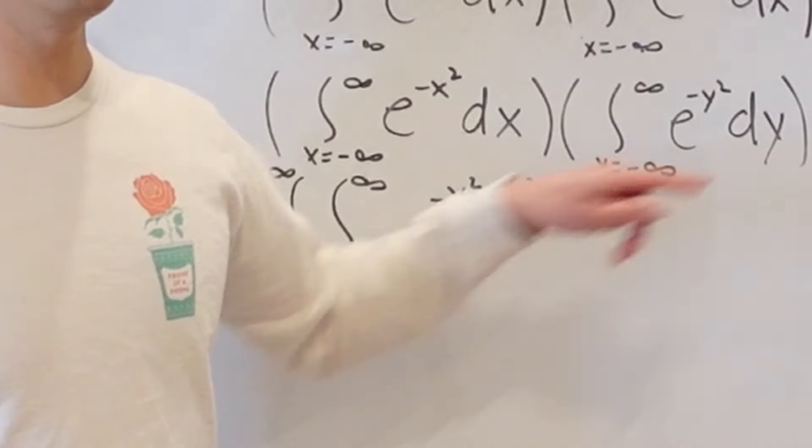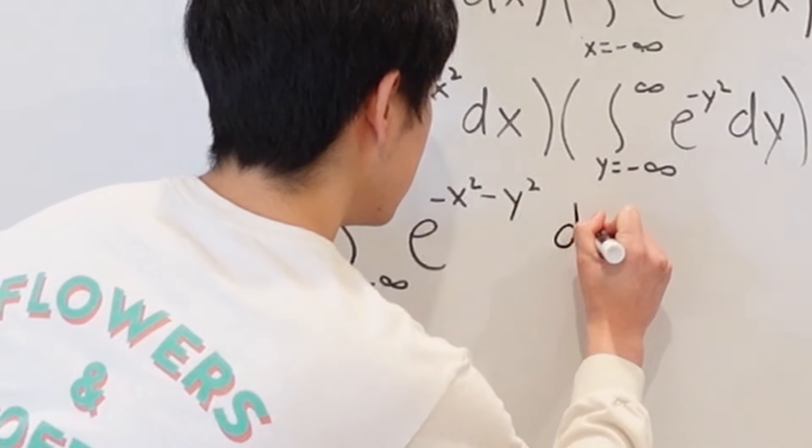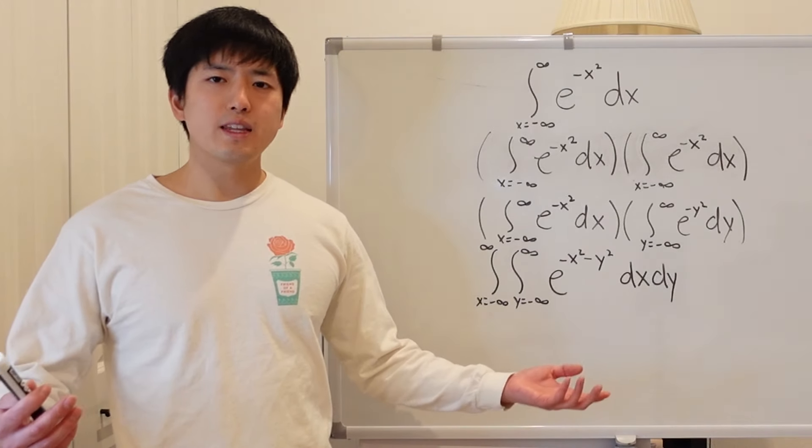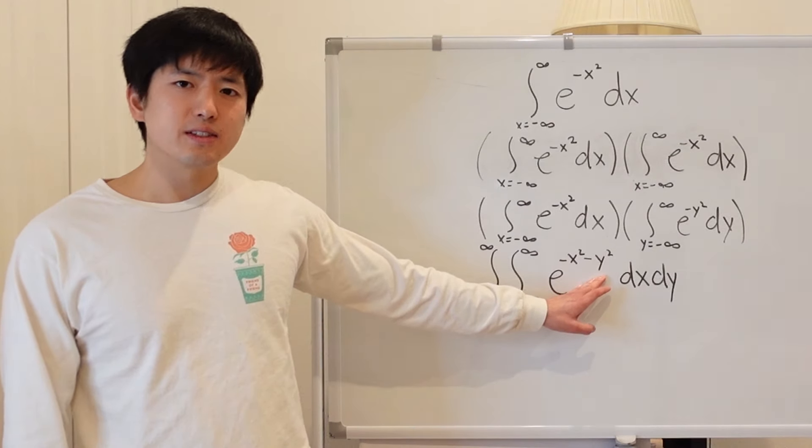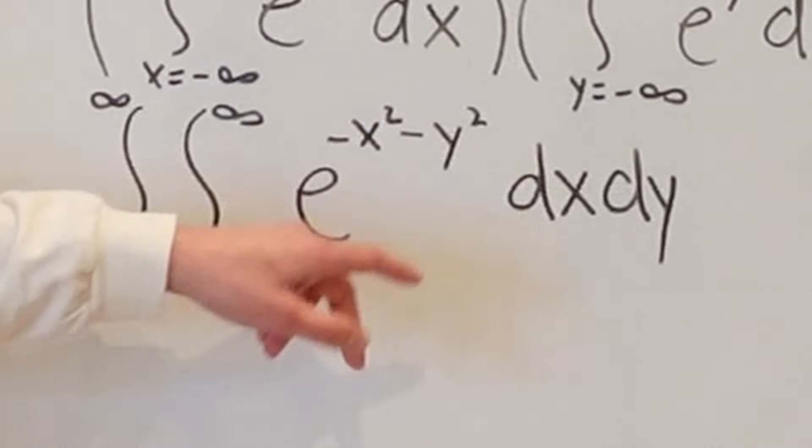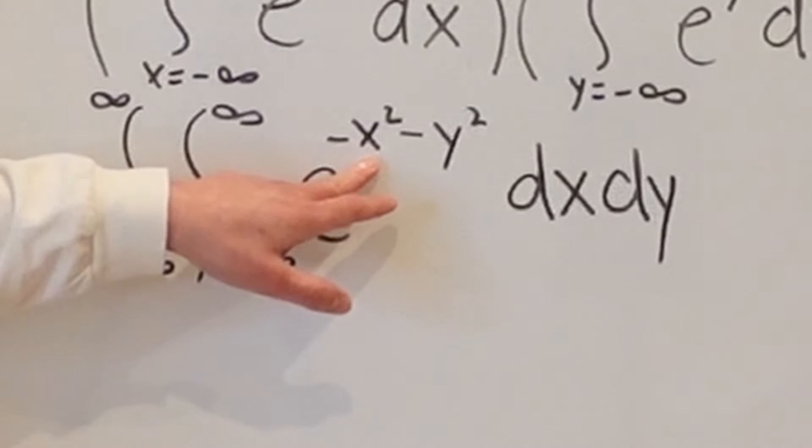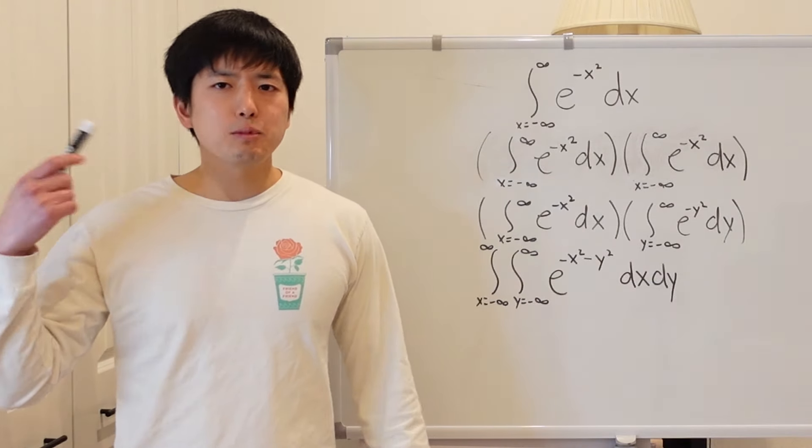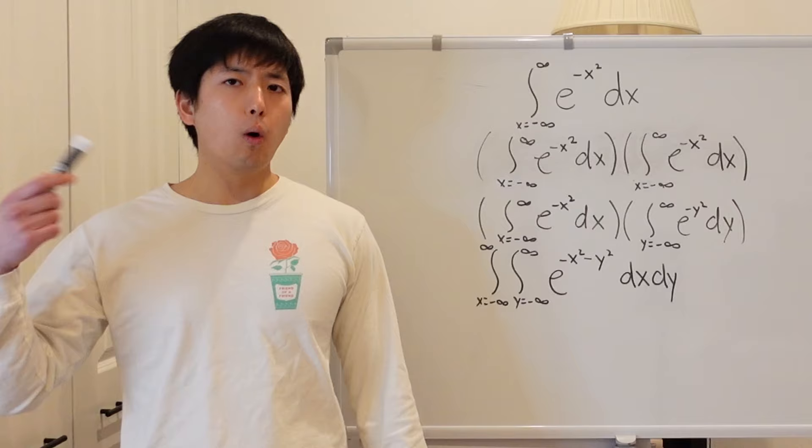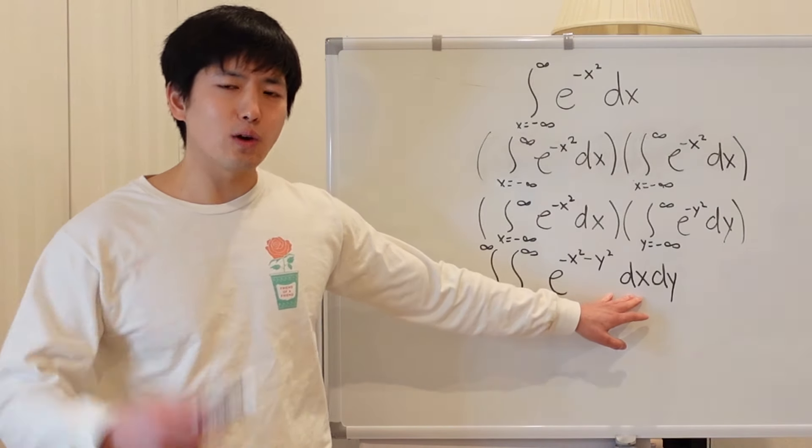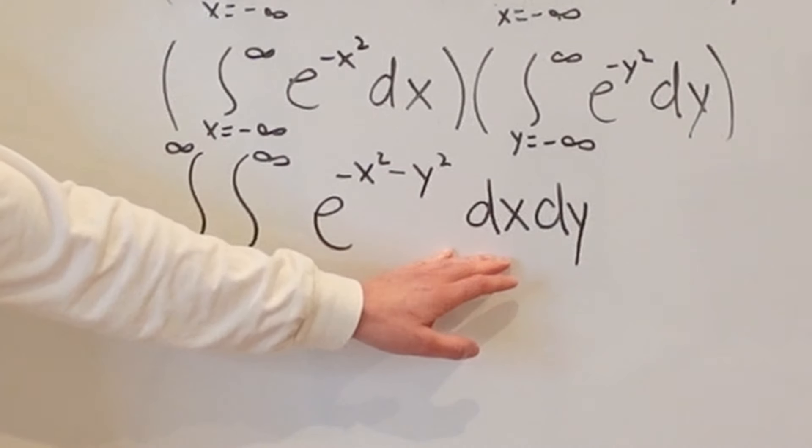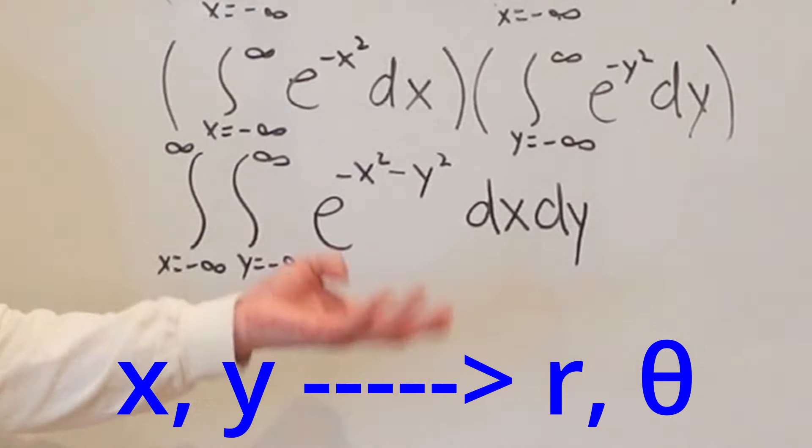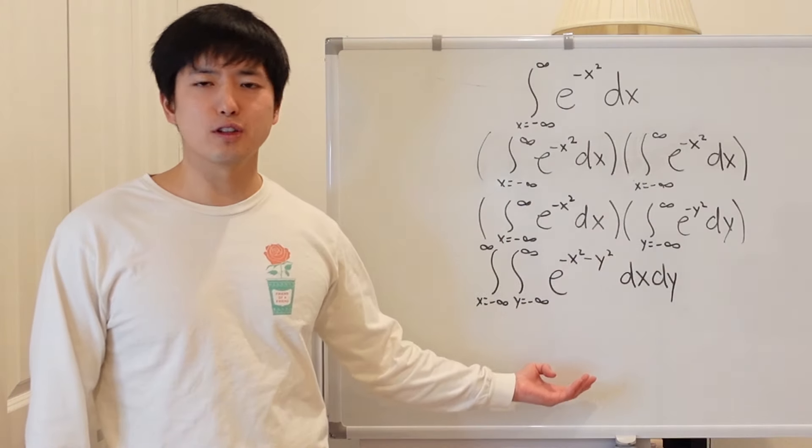And then of course there's dx and dy. So looking at this expression, what would the next step be? If you take a look at the exponent of this exponential, we see here we have negative x squared minus y squared. And when you see this, one thing that might come to mind is the concept of polar coordinates. So one thing we could try is instead of integrating across a Cartesian coordinate system, we can integrate it across a polar coordinate system. So that's the second trick here in solving for this expression.